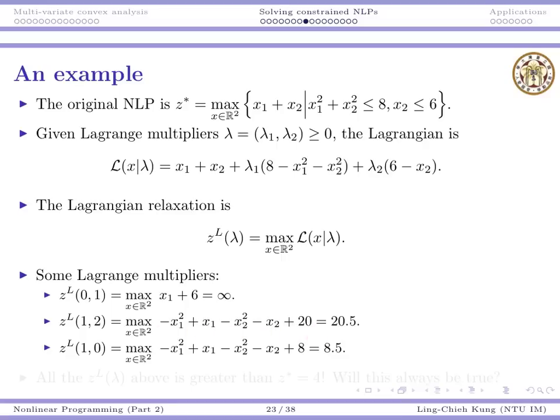Let's assume we have solved it. In this case, we just need to do first order condition because we are maximizing a concave function. If we plug in an optimal solution, we get 20.5. Or if the multipliers are 1 and 0, we will get 8.5. You may want to verify them by yourself.